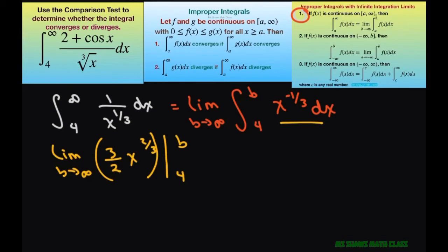So now that we have that, this equals the limit as b approaches infinity of 3 halves times b to the 2 thirds minus 3 halves times 4 to the 2 thirds.